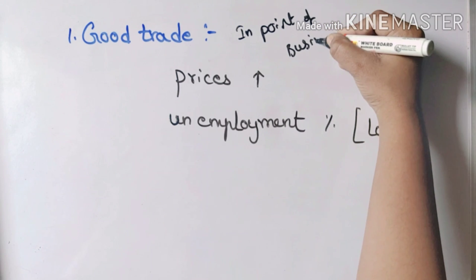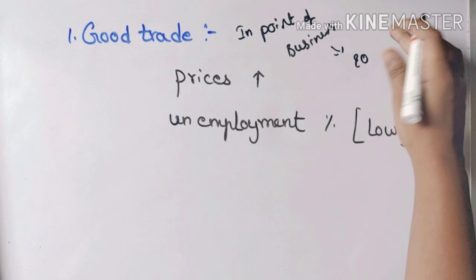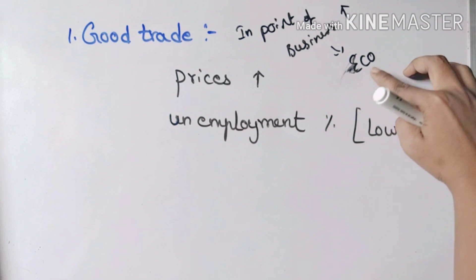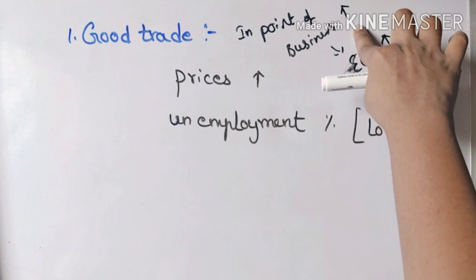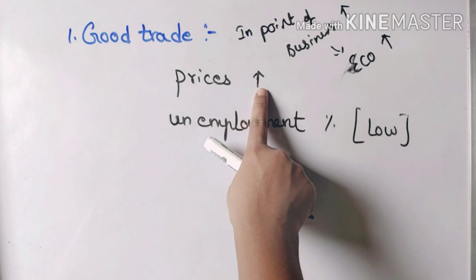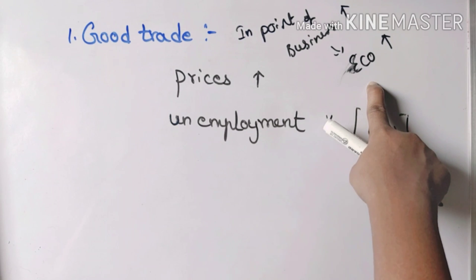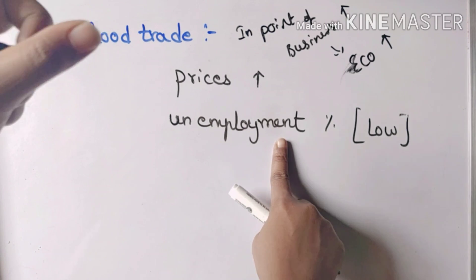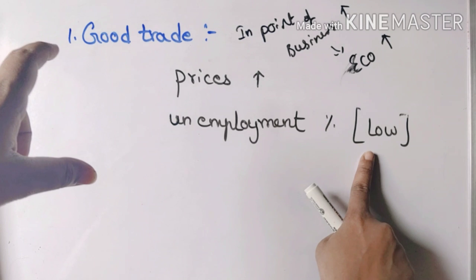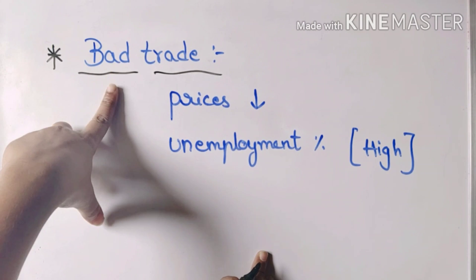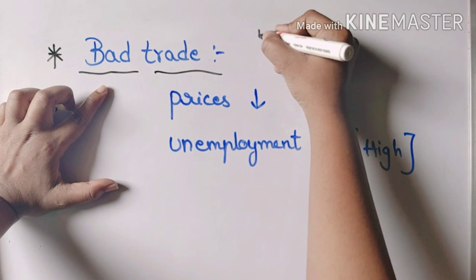When we are doing business, our economy will grow and increase, and automatically prices will increase. So prices equal profit; profit route means business; business rate means economy. In good trade, unemployment percentage is lower. In bad trade, prices are lower and unemployment percentage is higher — this applies from every point of view, including the business point of view.